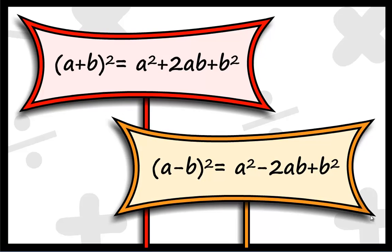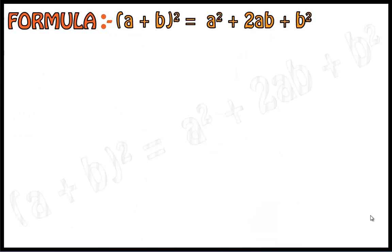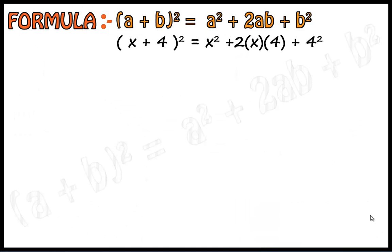Now let's consider this: a equals x and b equals 4. We thus get x plus 4 the whole square equals x square plus 2 into x into 4 plus 4 square. Therefore x plus 4 the whole square equals x square plus 8x plus 16.